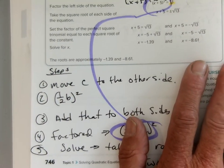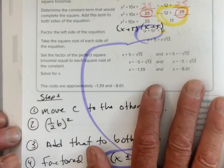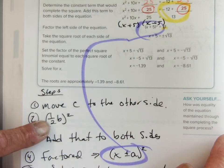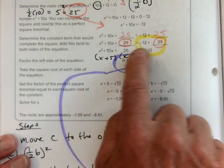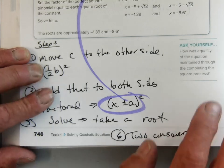So what are our steps? Step 1, we move c to the other side. I did that. Step 2, we took half a b, we squared it, we added that to both sides. We factored and we solved. And there are two answers.